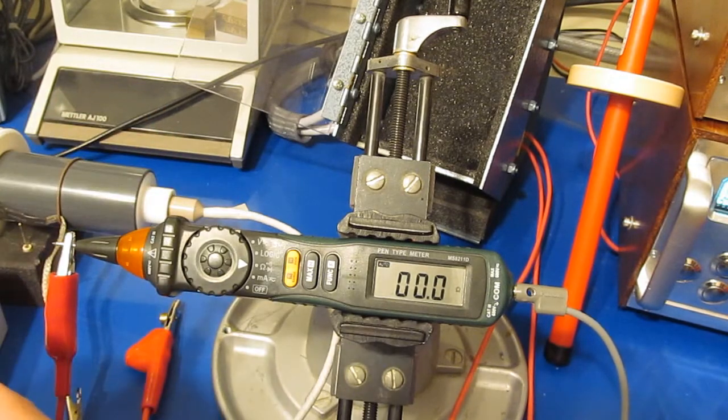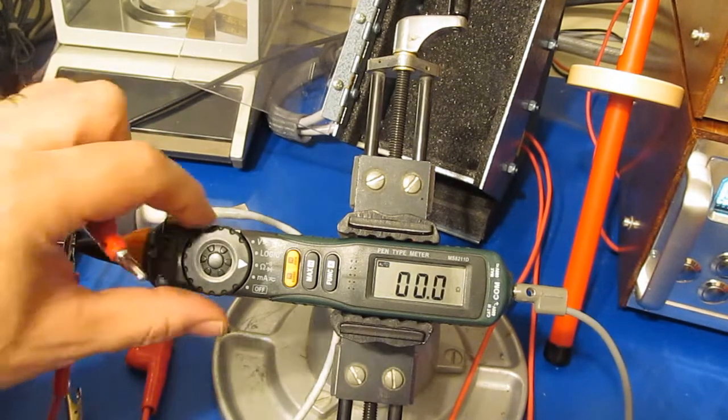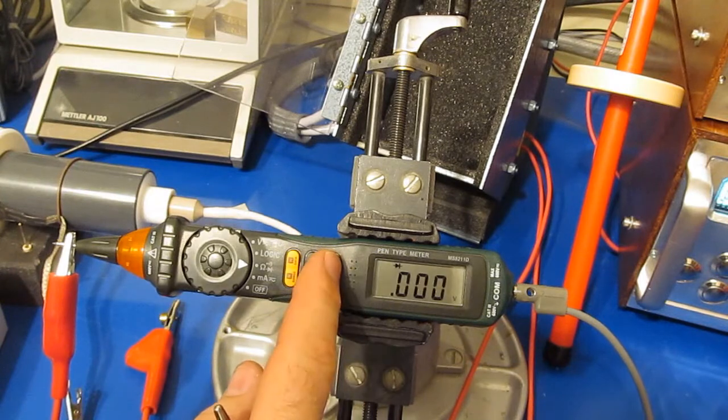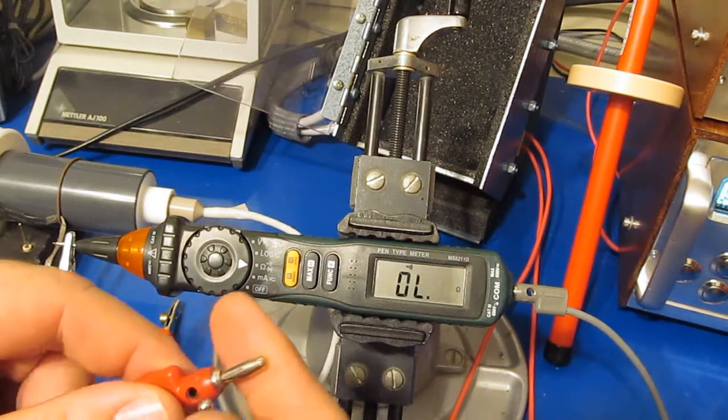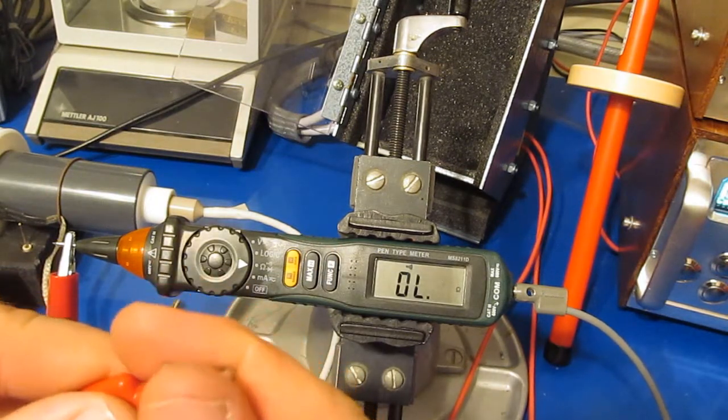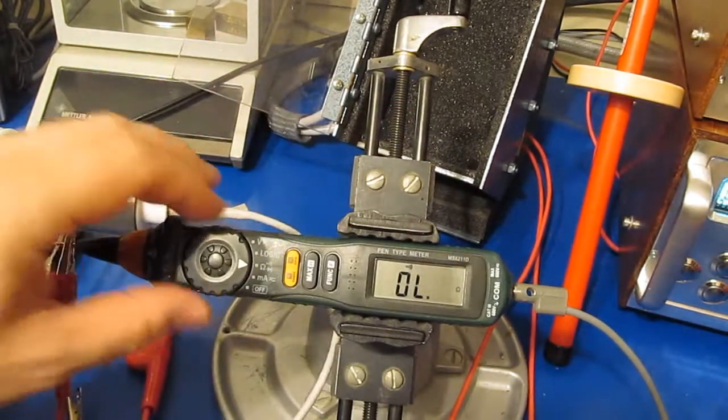Again this is resistance mode. And it's now reading a dead short. This is in continuity mode. And you notice as I short the leads. It doesn't read any sort of resistance.